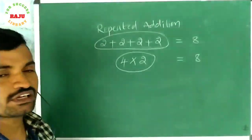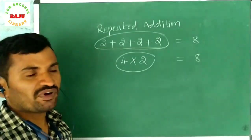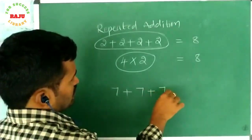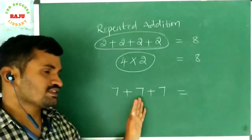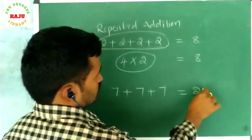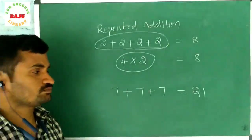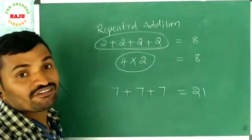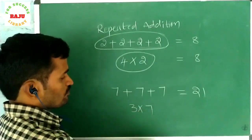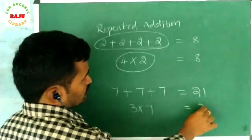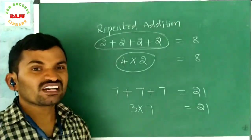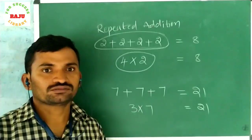For example, take 7 plus 7 plus 7. What is the answer? 7 plus 7 is 14, 14 plus 7 is 21. Here, which number is repeating? 7 is repeating — how many times? 1, 2, 3 — three times. So 3 times of 7 equals 21. So whatever you take, the repeated addition is called multiplication.